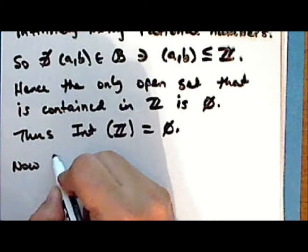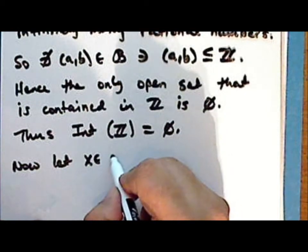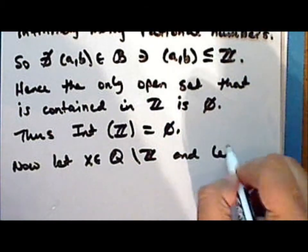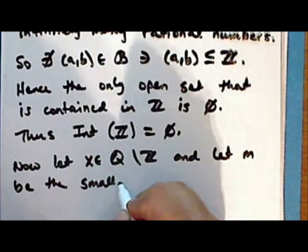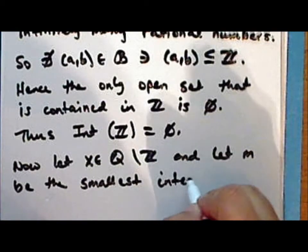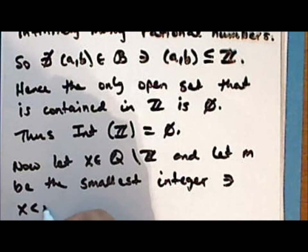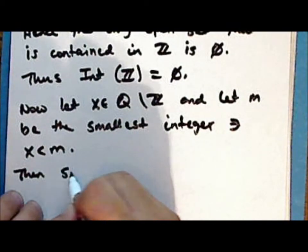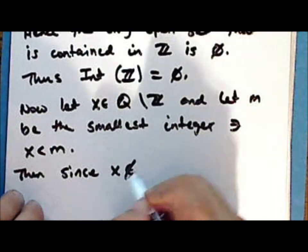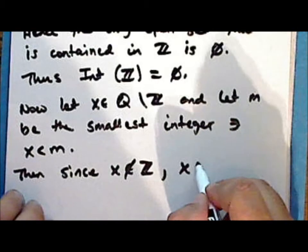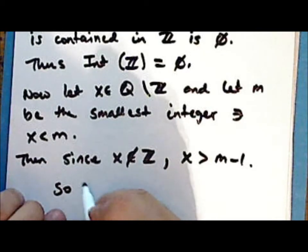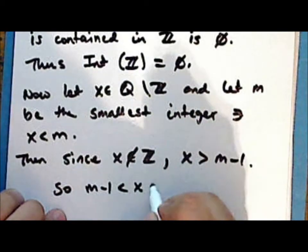Now let X be a point in the complement of the integers, and let M be the smallest integer such that X is less than M. Then since X is not an integer, X is greater than M minus 1, and so M minus 1 is less than X, which is less than M.